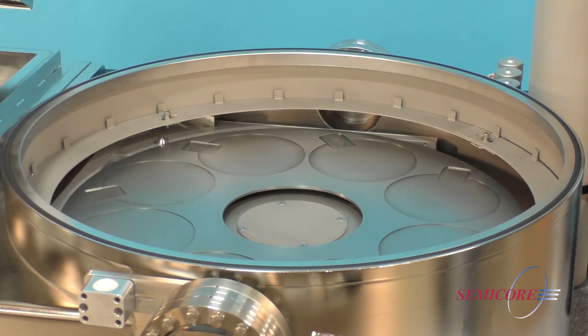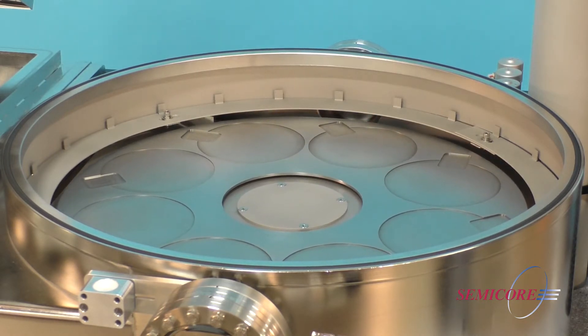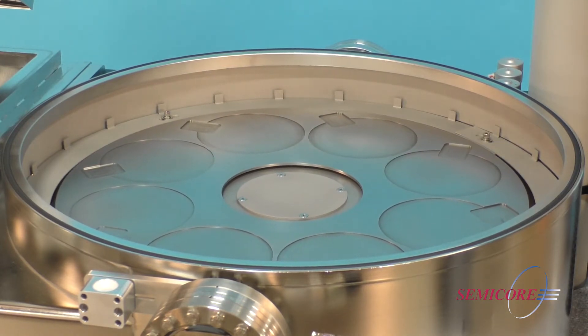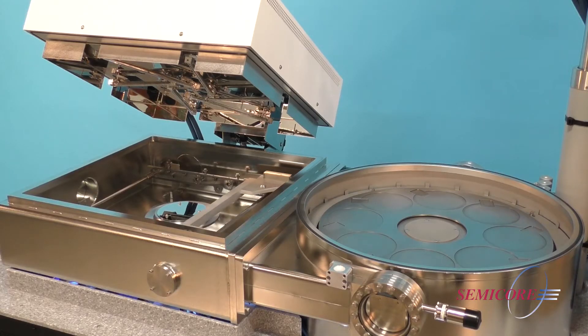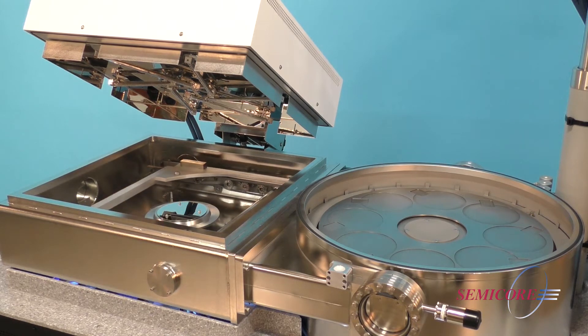In the process chamber, the table raises to its upper limit, lifting the pallet from the carrier. The carrier then retracts into the load lock chamber, and the chamber isolation door closes.